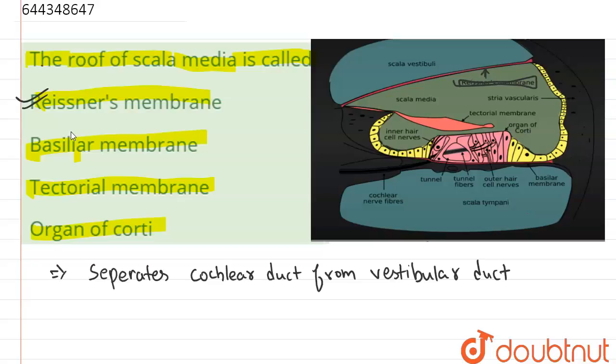This membrane will separate the cochlear duct which is the median scala from the vestibular duct or scala vestibule. Now this Reissner word is coming from the name of German anatomist whose name is Ernest Reissner.